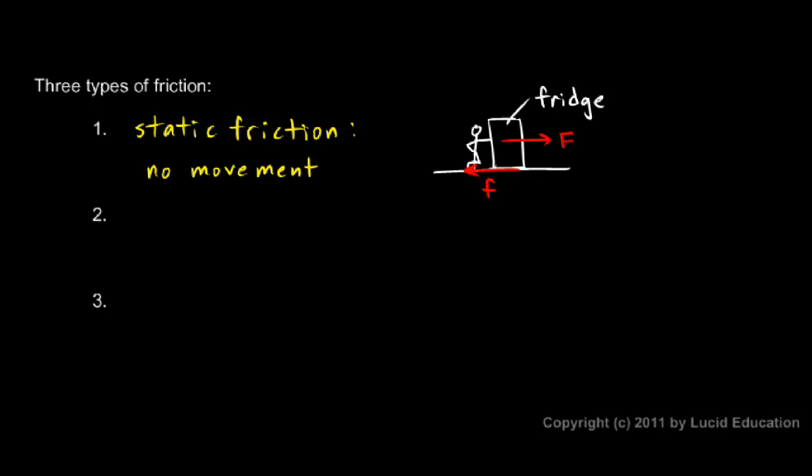Now, of course, it's possible to push a refrigerator hard enough to move it. If you made this force big enough, you could overcome the friction and get the refrigerator to move. And people do that every day. They move refrigerators around. But just in a situation like this where you're just leaning there, you wouldn't expect the refrigerator to move. And when there's no movement between the surfaces, that force of friction down there is static friction.